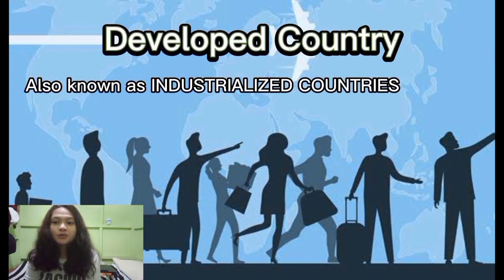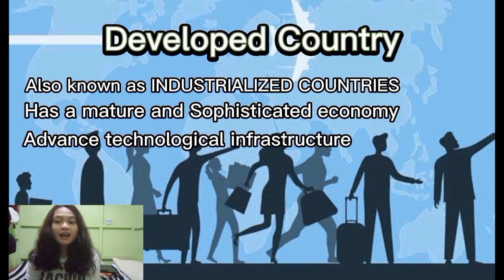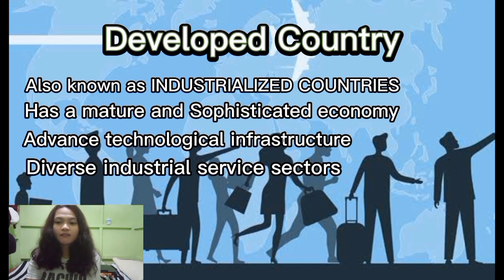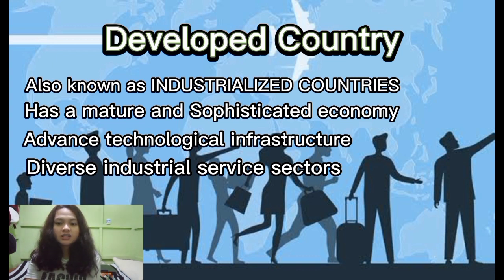A developed country, also called an industrialized country, has a mature and sophisticated economy, usually measured by gross domestic product or average income per resident. Developed countries have advanced technological infrastructure and diverse industrial and service sectors. For example, the United States was the richest developed country on earth in 2021 with a total GDP of 23 trillion dollars, and China was the richest developing country in 2021 with a total GDP of 17.73 trillion dollars.